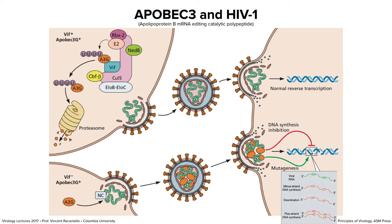This process results in antiviral effects by mutagenesis, and has been called a WMD — a weapon of mass deamination. You may wonder why HIV infects anyone if we have this ApoBec protein around. As will be a theme throughout these sessions, viruses antagonize. Any virus around today has evolved to antagonize some aspect of immunity, and ApoBec is no exception.